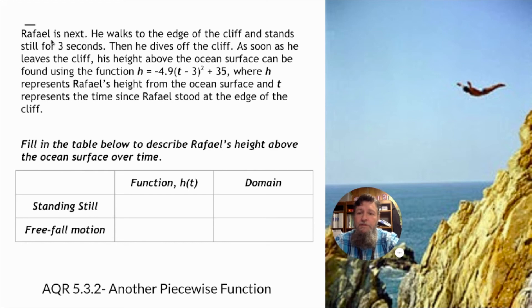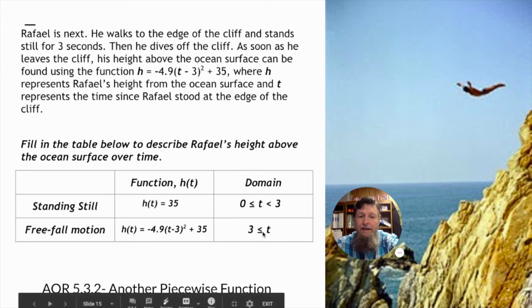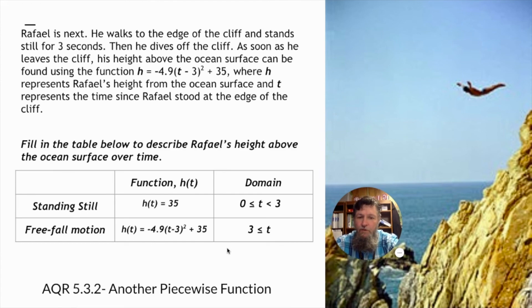Rafael's next. He walks to the edge of the cliff, stands still for three seconds, then he dives off the cliff. As soon as he leaves the cliff, the height above the ocean surface can be found using the function, H equals minus 4.9 times T minus 3, that quantity is squared, plus 35, where H represents Rafael's height from the ocean surface, and T represents the time since Rafael stood at the edge of the cliff. Fill in the table below to describe Rafael's height above the ocean surface over time. So while he's standing still, H of T equals 35. And the domain is just from zero to three, because he dives off three seconds later. And it's free fall motion. H T, just like we're given, is minus 4.9 times T minus 3, that quantity raised to the second power, plus 35. That domain is three less than or equal to T, whatever T is, until he hits the surface of the water.